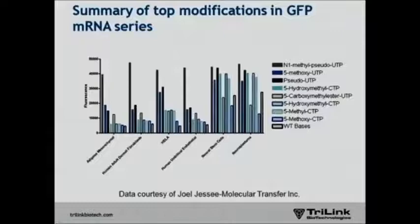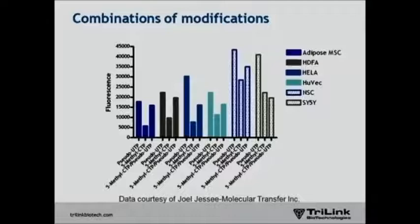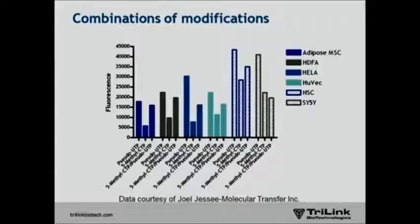An interesting observation is that there are cell-type-specific differences in responses to different chemically modified RNAs. The neural stem cells and neuroblastoma cells seem to be less picky about which pattern of chemical modifications was used, which may reflect different expression of innate immune sensors in the cell. People also commonly use a combination of pseudo-U and 5-methyl-C, as Karikó originally published. What we found was that addition of the second nucleotide did not seem to improve activity — in fact it diminished it. Generally, combining two modifications tended to result in lower activity.